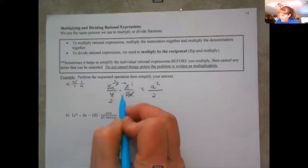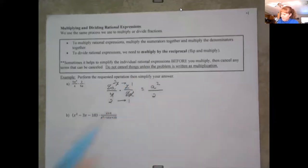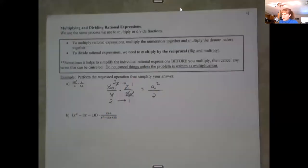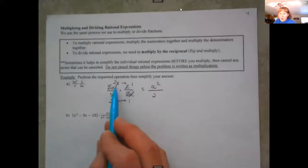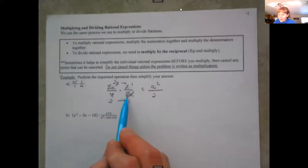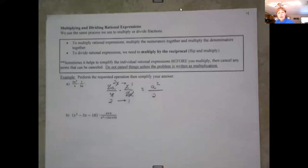Remember you multiply across. So 2 times 1 is 2, and a² times 1 is a². You just reduce anything in the numerator with anything in the denominator, then multiply straight across with what's left. If you reduce first, your answer will already be reduced.